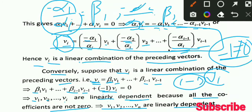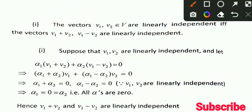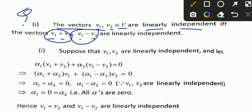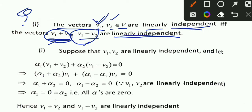Now let's take some examples and questions. The vectors V1 and V2 belong to vector space V. The question is: V1 and V2 are linearly independent if and only if the vectors V1 plus V2 and V1 minus V2 are also linearly independent.